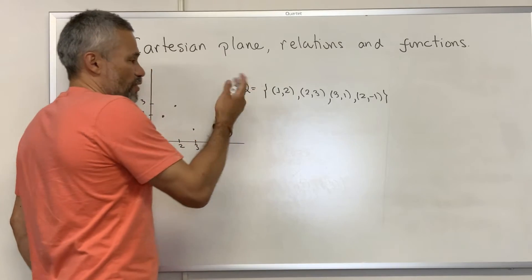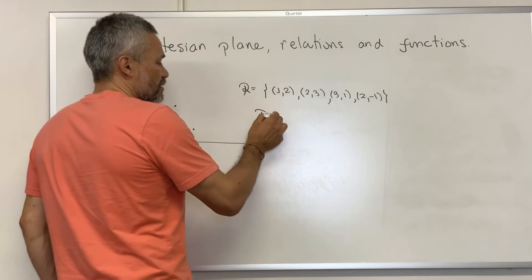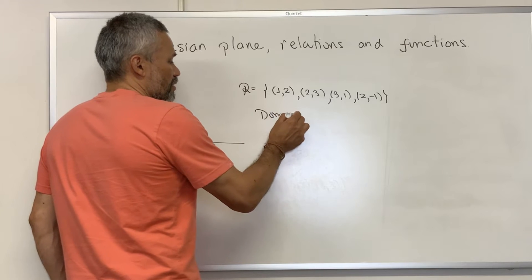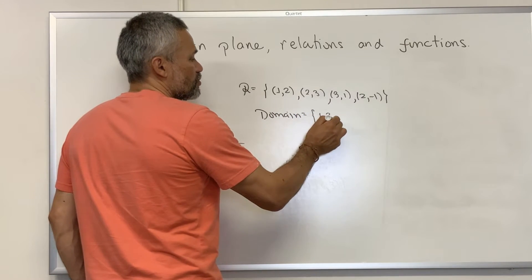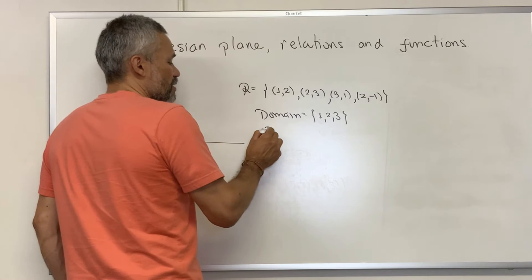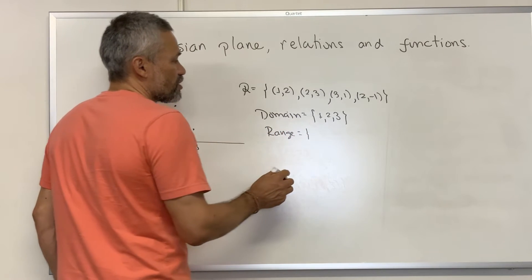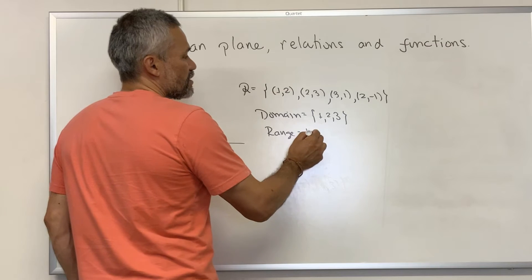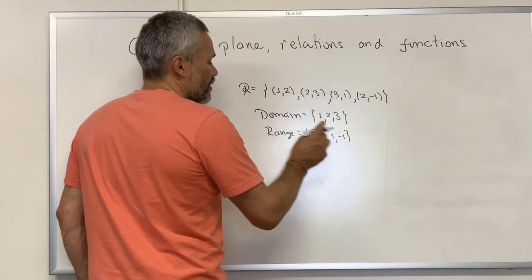And when we have a relation, we can find the domain, which is, in this case, 1, 2, and 3. And we can find the range, which is the collection of second entries: 2, 3, 1, and negative 1.